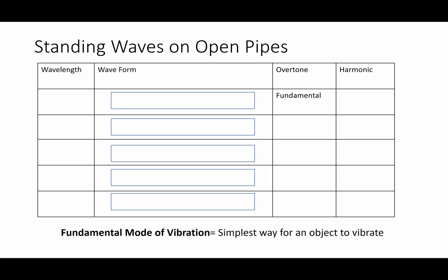The same way that we made a chart for strings, I'm going to ask you to draw with me as we make a chart for open pipes. Now the fundamental mode of vibration is one half wavelength and it's going to have an anti-node at both ends and that is also going to be called the first harmonic.